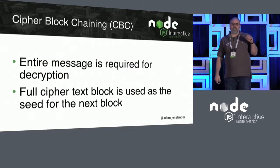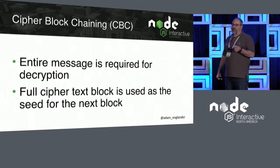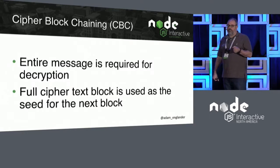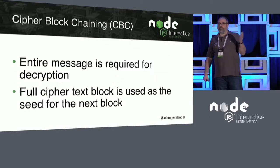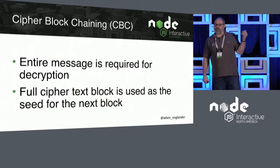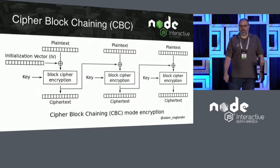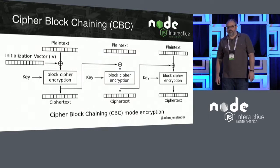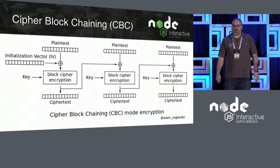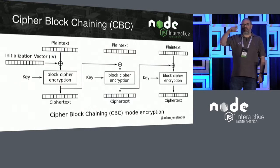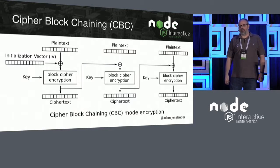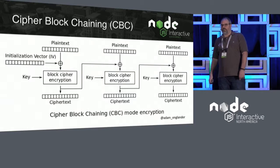Cipher block chaining is important because the entire message is required for decryption. A full cipher text block is used as the seed for the next block, as I showed in the example. You're taking the encrypted part of one piece of data, putting it into the next one, and using that for encryption. Super, super safe.